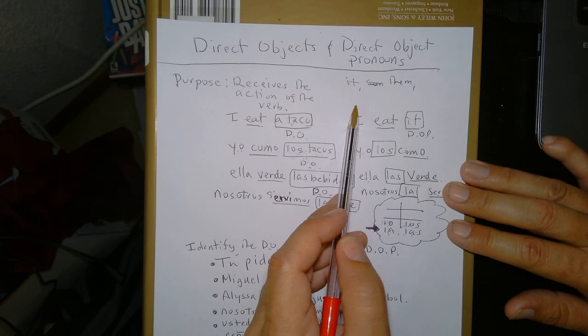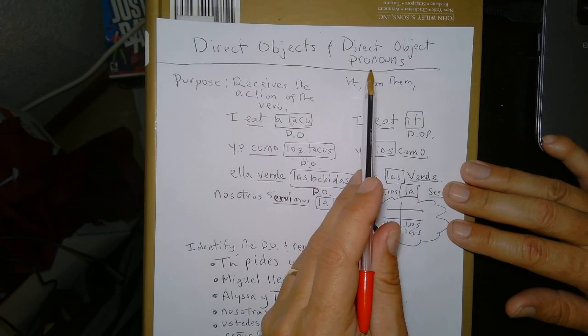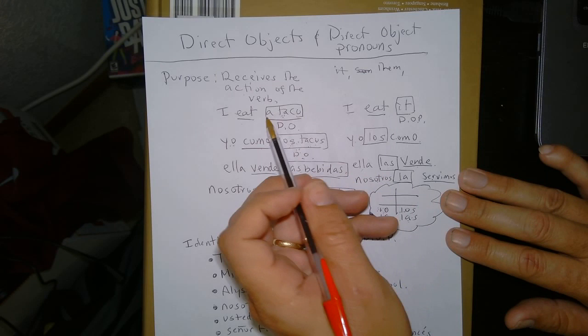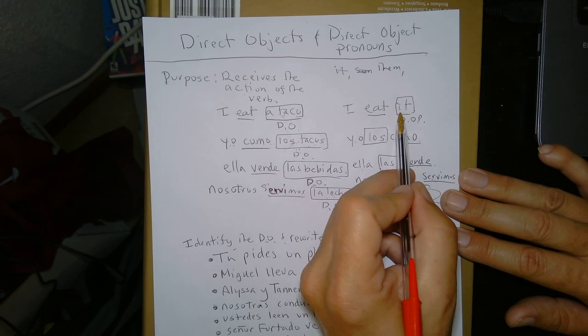We use direct object pronouns or pronouns in general to replace the noun we're modifying or replacing. That's what pronouns do. Why do we do that? So we can have some variety in the way we use the language. So I eat a taco. I'd say I eat it. And it's the same thing. There's no difference. Except we use the word it to replace taco. And it is a direct object pronoun. A D-O-P.